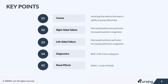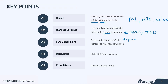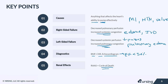Let's recap. Anything that affects the heart's ability to pump effectively can cause heart failure, including MIs, hypertension, and valve disorders. In right-sided heart failure, we see decreased perfusion forward to the lungs and increased systemic congestion — the big things are peripheral edema and JVD. In left-sided, we see decreased systemic perfusion with decreased pulses, and increased pulmonary congestion with pulmonary edema — especially pink frothy sputum and significant shortness of breath. We use a BNP, a chest x-ray, and an echocardiogram to diagnose, and we'll see an ejection fraction usually less than 50%. Remember that the impact on the kidneys can make the problem worse, and we'll talk in the next lesson about how to break that cycle of death for these patients.